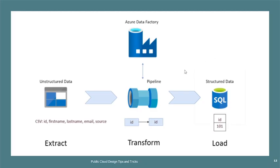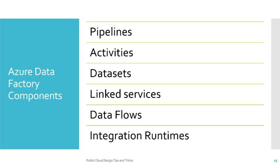So as you can see, there are multiple phases: first is extract, where you have unstructured data; then transform, where you map unstructured data to a structured format; then load. This is the standard flow of Azure Data Factory. Azure Data Factory is a cloud-based data integration service that allows you to create data-driven workflows in the cloud, organizing and automating data movement and transformation. Now let's understand the different components available in Azure Data Factory: pipeline, activities, datasets, linked services, data flows, and integration runtime.